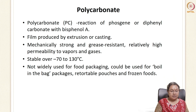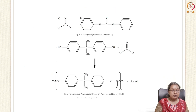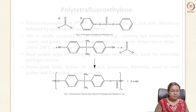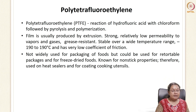Polycarbonate is not very widely used in food packaging, but it can be used in boiling bag packages, food retort pouches, and frozen foods. The monomer has two chlorine molecules and bisphenol A; they react together to give polycarbonate. On polymerization, monomers join together to give the polymer of polycarbonate. Next is polytetrafluoroethylene, otherwise called PTFE.